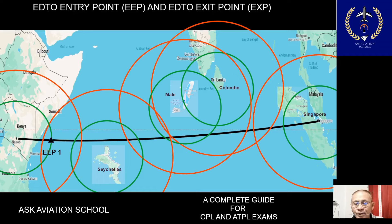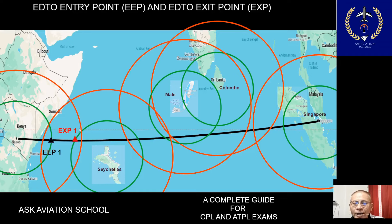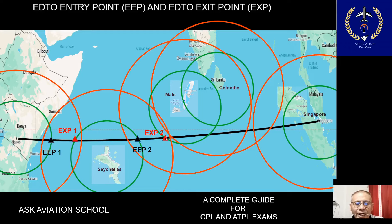The aircraft flies further and re-enters the green circle drawn using 60 minutes of flight time from Seychelles. At this point the aircraft returns to normal flight and exits the EDTO segment — this is EDTO Exit Point 1 (EXP1). Continuing further, the aircraft exits the green circle again and re-enters EDTO flight, giving EDTO Entry Point 2 (EEP2). The aircraft then enters the green circle drawn using 60 minutes from Male, returning to normal operation — this is EDTO Exit Point 2 (EXP2).